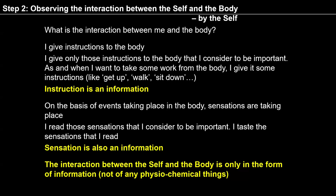This instruction is in the form of information. We have to observe: whatever instruction we give to the body, is it in the form of information? Similarly, when I read a sensation, we can also see that reading sensation is in the form of information. We are reading sensations from the body and giving instructions to the body. Instruction is also information, sensation is also information. So interaction between the self and the body is only in the form of information. No physiochemical things are being exchanged between me and the body.